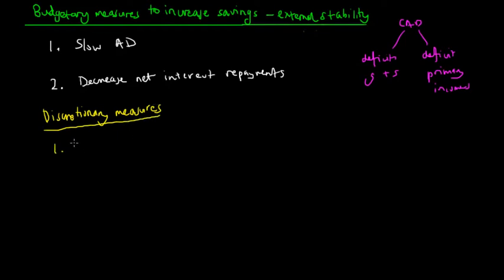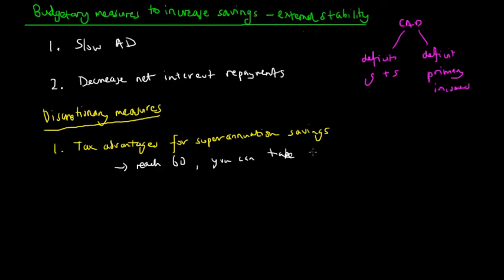The first discretionary measure was recently implemented: tax advantages for superannuation savings. Super is a major form of savings in this nation. Superannuation is directly contributed by your employee to your superannuation fund, and you can take that out once you retire. What the government implemented was that once you reach the age of 60, you can take your super out tax free. Before that, you had to pay a tax, but now to encourage people to keep their money in their superannuation savings, if you leave your super until you turn 60, you can take your super out for free.